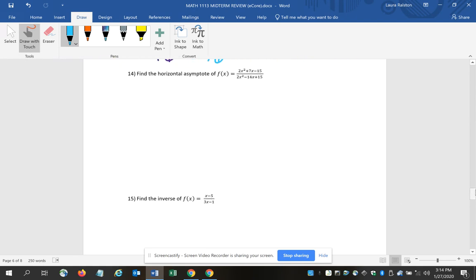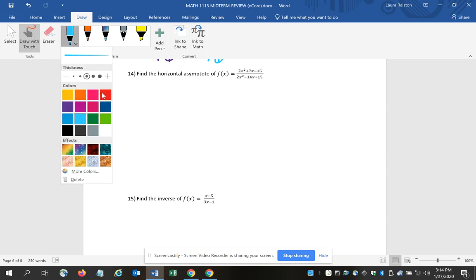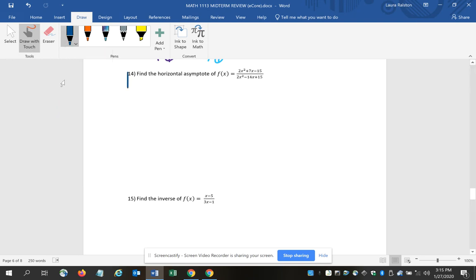Question 14 – still dealing with a rational function and they want you to find the horizontal asymptote. Honestly, the first thing you should do here is decide whether or not a horizontal asymptote exists – to decide whether a horizontal asymptote exists or not.